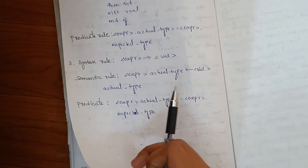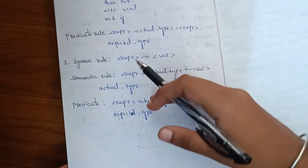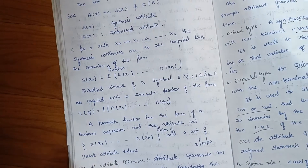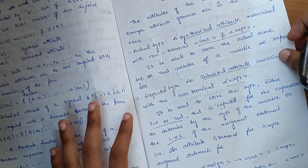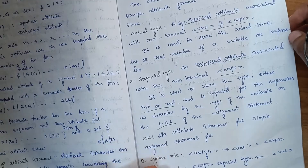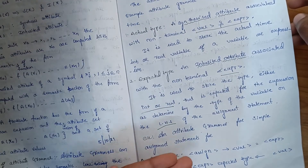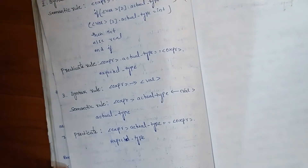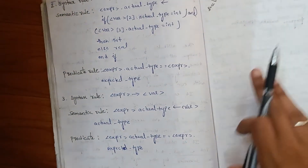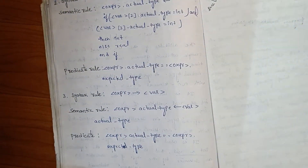If we have the attribute grammar, we can follow the syntax type. It is important to know the definition of actual type and expected type. This concludes our topic and we will finish the first unit.